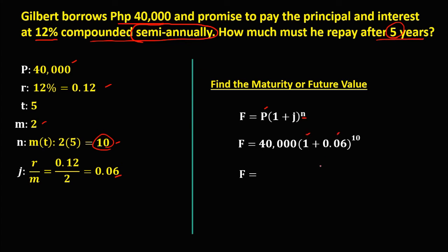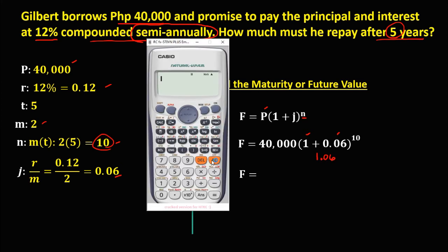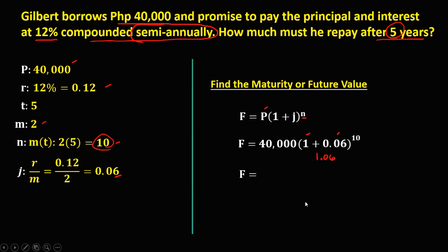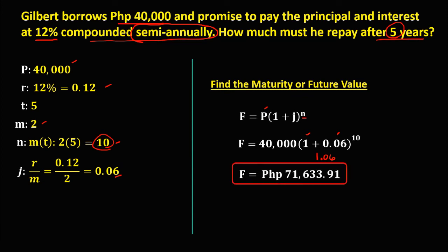Since 1 plus 0.06 equals 1.06, we have 40,000 times 1.06 to the power of 10, which equals 71,633.91 pesos. So the future value is 71,633.91 pesos — this is the amount that Gilbert must repay after five years.